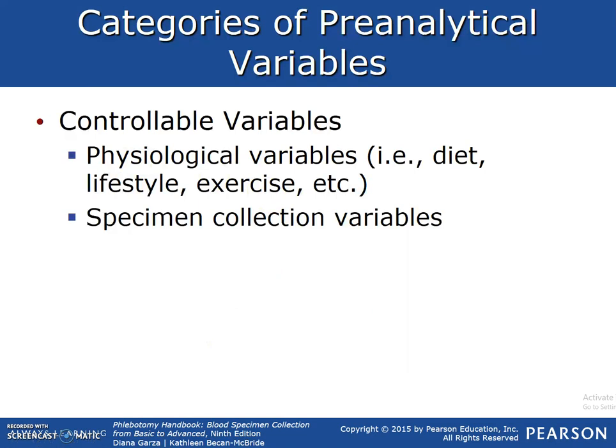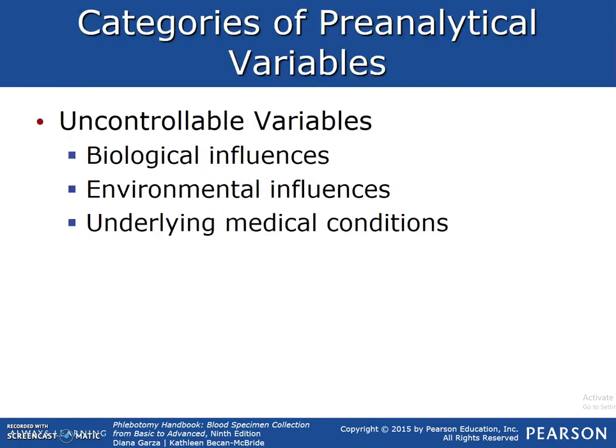Controllable variables: physiological variables are things that a patient has control of — their diet, their lifestyle, their exercise. We have control over the specimen collection variables, such as whether we collect via capillary method or via a butterfly needle. Uncontrollable variables include biological influences, environmental influences, and underlying medical conditions. For example, patients who are diabetic coming in for a fasting test would be an uncontrollable variable we need to take into consideration.